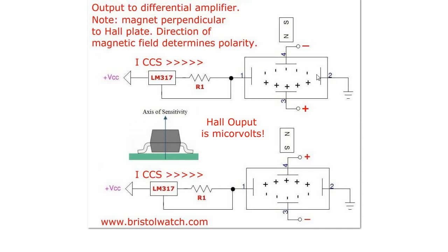Here is a Hall plate. If you approach it perpendicular with that strong magnetic field on the Hall plate, the polarity will be number four is negative, three is positive. If I reverse the magnet, then I will reverse the polarity with three being negative and four being positive.